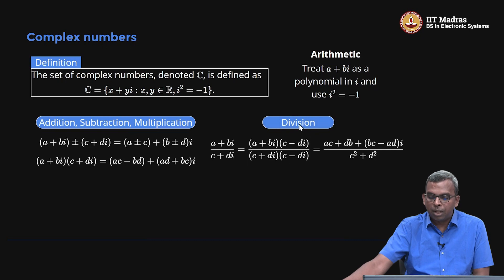Division is a bit involved. If you want (a plus bi) by (c plus di), you multiply and divide by c minus di. This makes the denominator real—it becomes c squared plus d squared—and the numerator is some complex number. This way you can also do division. Complex numbers: you can add, multiply, subtract, divide.